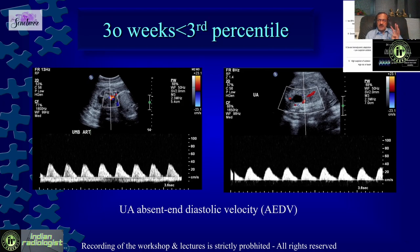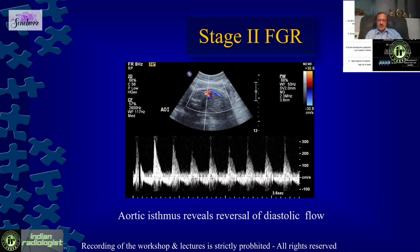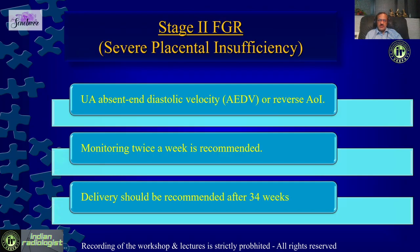Second example: 30-week gestation with weight less than the 3rd percentile — already FGR. Now we need to stage it by looking at Doppler. We see the umbilical artery showing absent diastolic flow and the aortic isthmus showing reversal of flow — this is Stage 2 FGR. In Stage 2 FGR, we need close monitoring twice a week. Gratacos recommended delivery around 34 weeks of gestation.